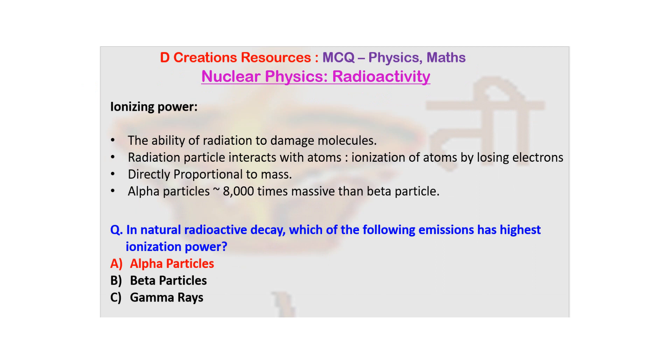Now, as you would guess, it is directly proportional to mass. Now, amongst the three, you can notice that if you compare alpha and beta particles, alpha particles are way more massive as compared to beta particles. The fact that it is two protons and two neutrons means it is already four times massive as compared to mass of proton.